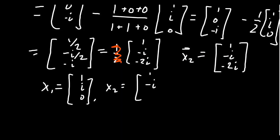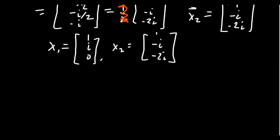And x2 is what we just got a moment ago. 1, negative i, negative 2i. And so if we take the inner product of these things, remember we're taking the Hermitian product here, x1 dot x2. We're going to take 1 bar times 1. We're going to get i bar times negative i. And then we're going to get 0 bar times negative 2i.